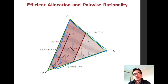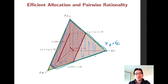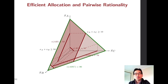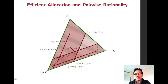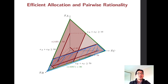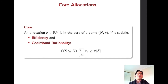Similarly, for A and C the joint requirement is x_A plus x_C greater than or equal to 10, so this line represents x_A plus x_C equals 10, and the feasible sub-area is above this line within the efficient triangle. And for B and C, who can generate 70 together, the required area satisfies x_B plus x_C greater than or equal to 70 in the efficient area.